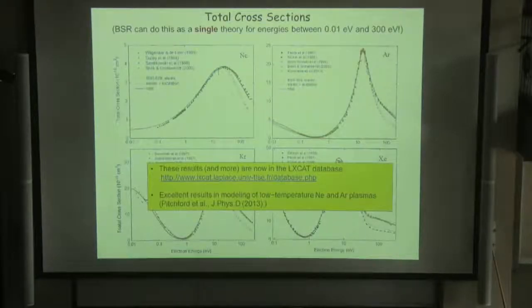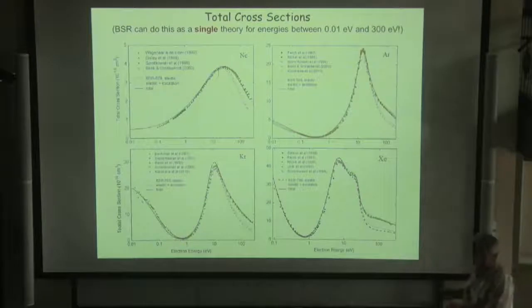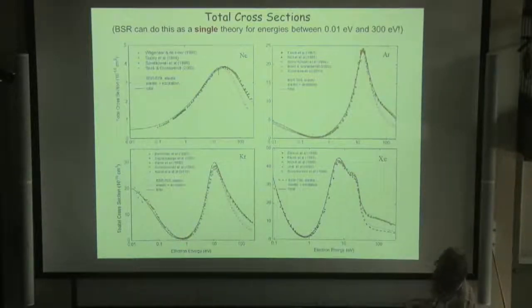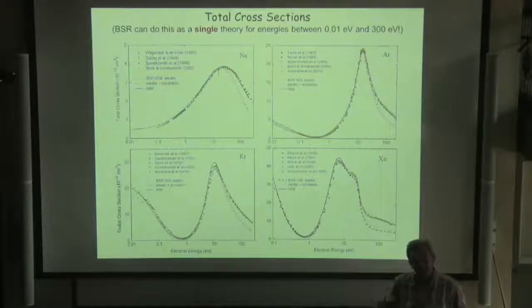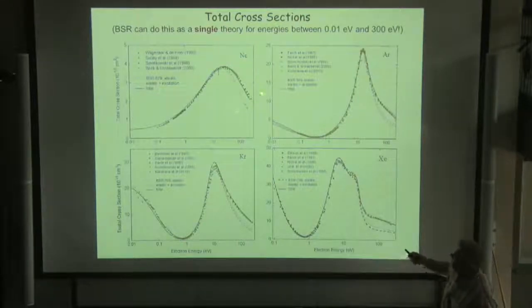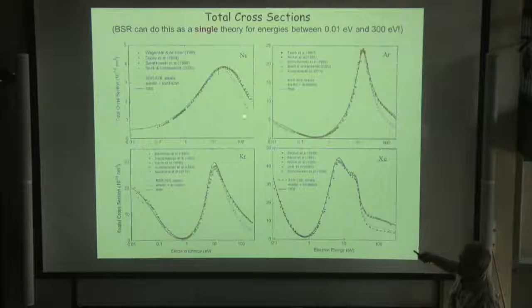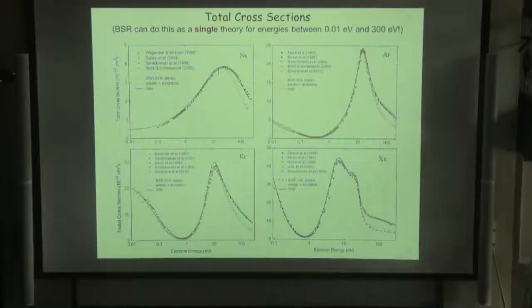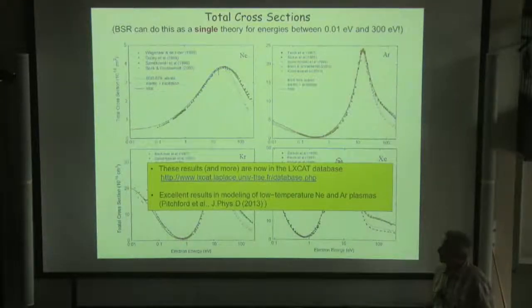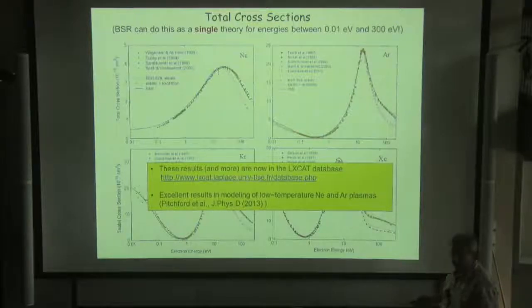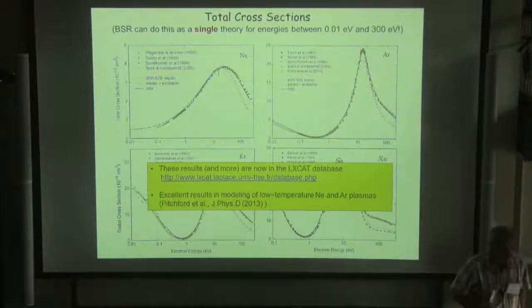Here's a summary of our results for the total cross-sections for neon, argon. It is very good agreement. Interesting that our calculation in one shot provides very accurate results in the big range of energies, very good. And we provide also relative contribution: elastic, excitation, ionization results. And these results are put in the LXCat database and applied for modeling of low-temperature neon and argon plasma, and probably show good results in the very preliminary experiments.